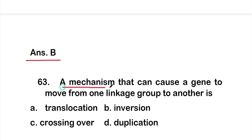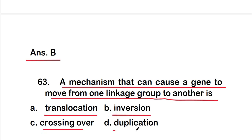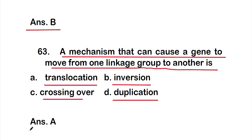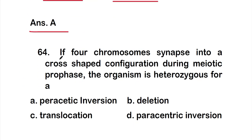Question 63: a mechanism that can cause a gene to move from one linkage group to another is — Option A: translocation, Option B: inversion, Option C: crossing over, Option D: duplication. The right answer is Option A, translocation. A mechanism that can cause a gene to move from one linkage group to another is translocation.